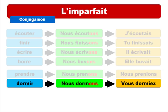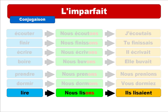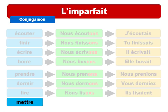Lire means 'to read.' We get 'nous lisons' at the present form. For the imparfait, we get 'il lisait.' Remember, even though there are many letters written after the stem, we don't pronounce them after the 'é' sound. Then mettre, which means 'to put': 'nous mettons' at the present, giving us 'elle mettait' in the imparfait.